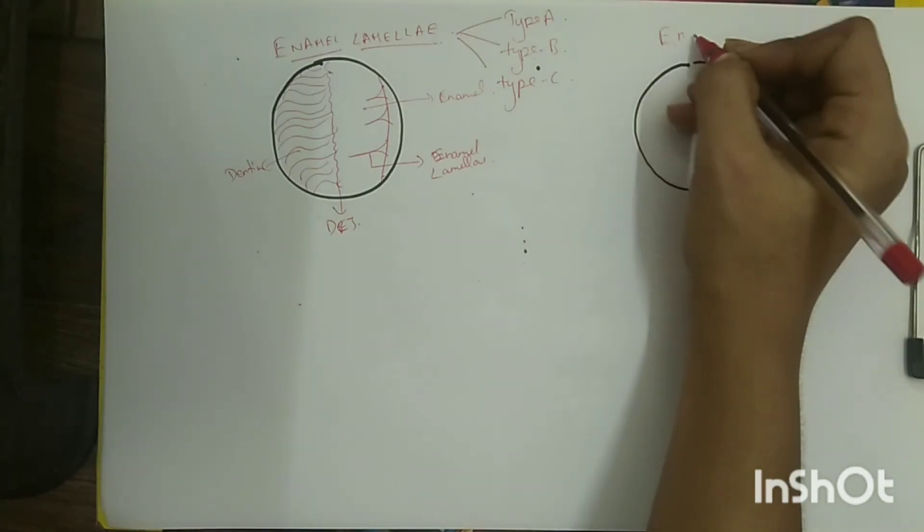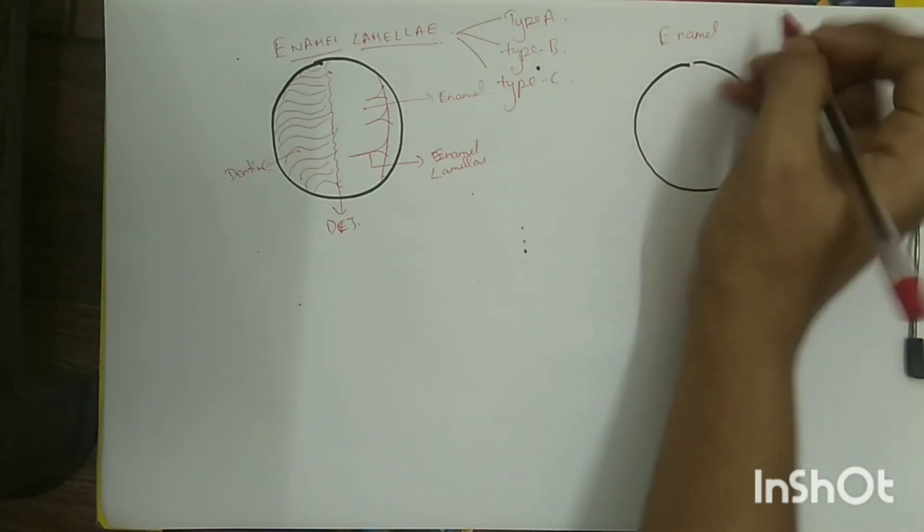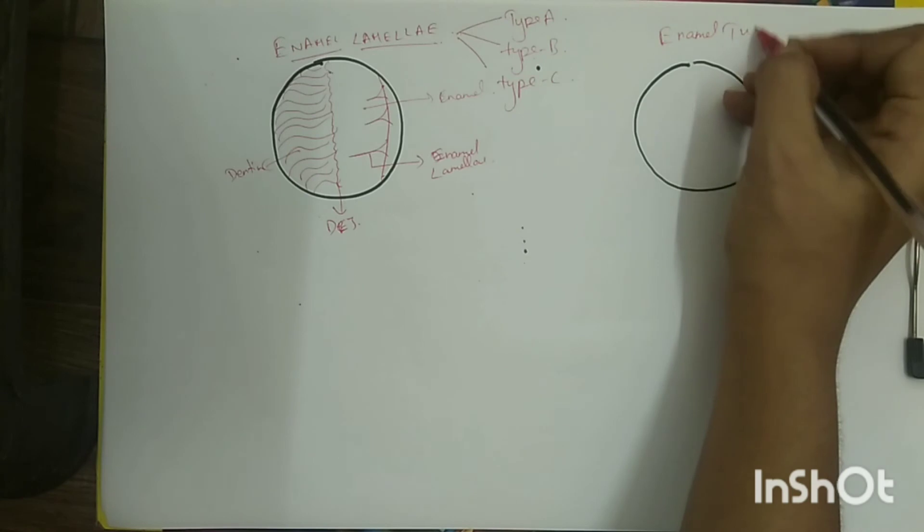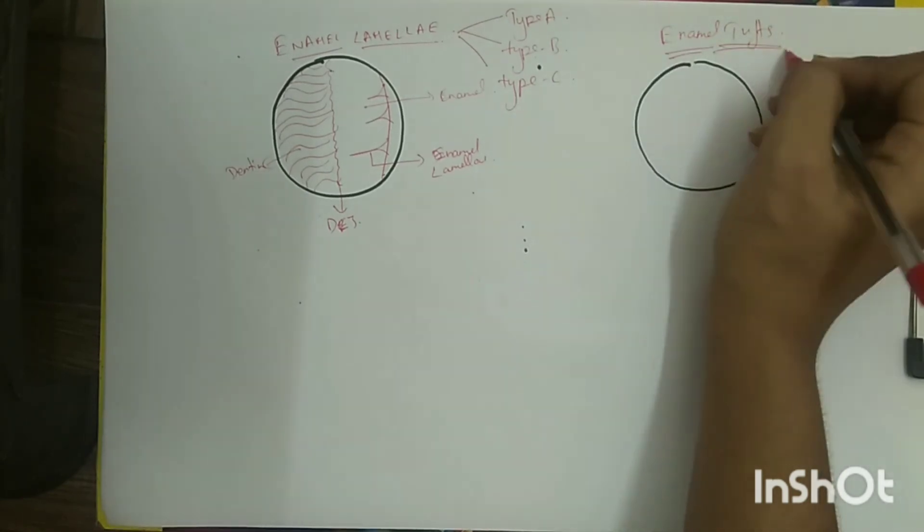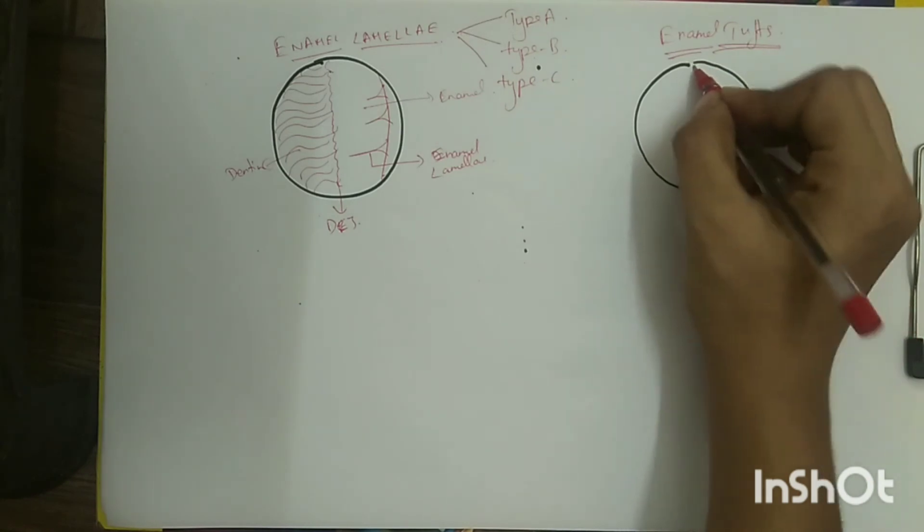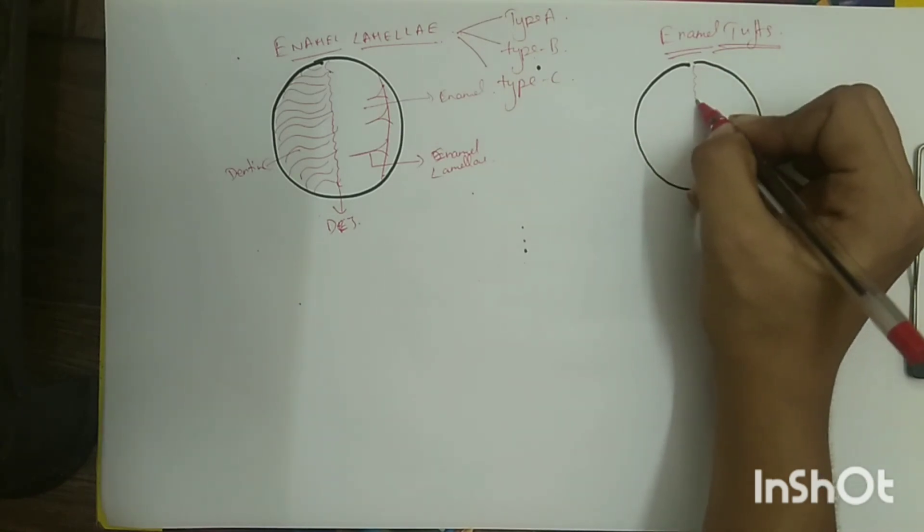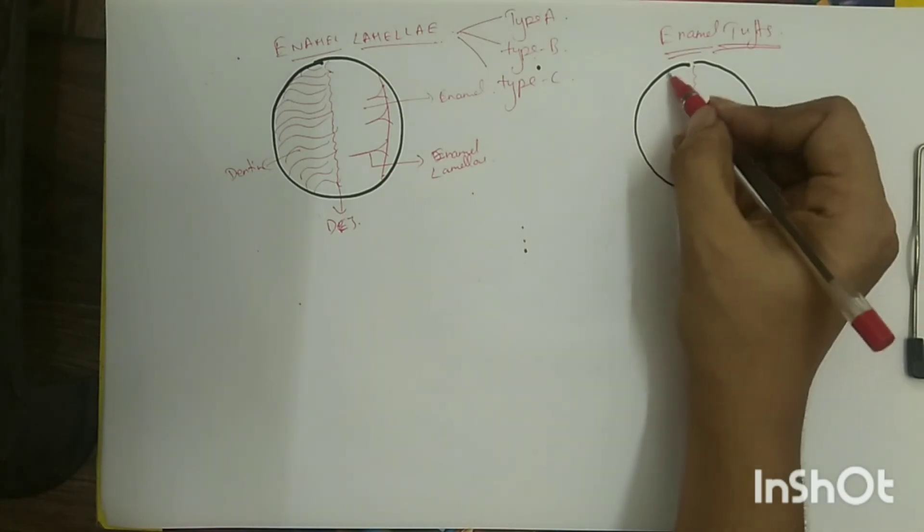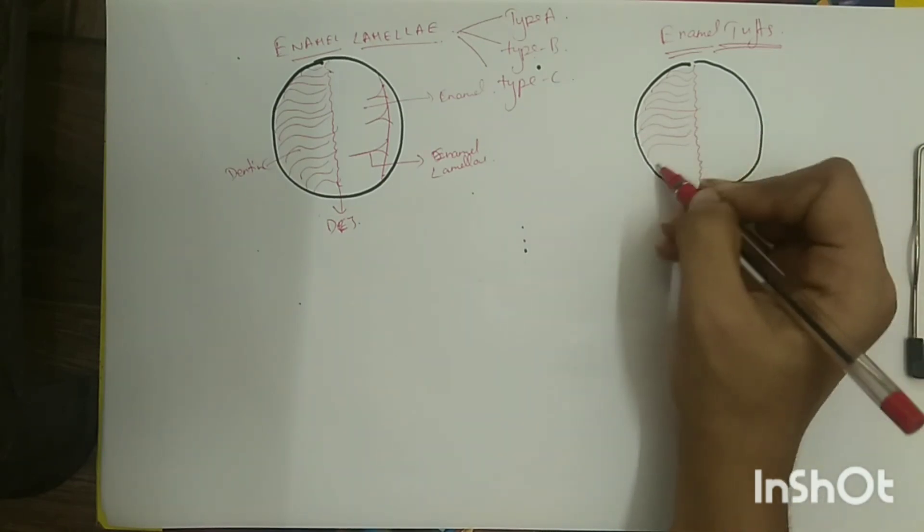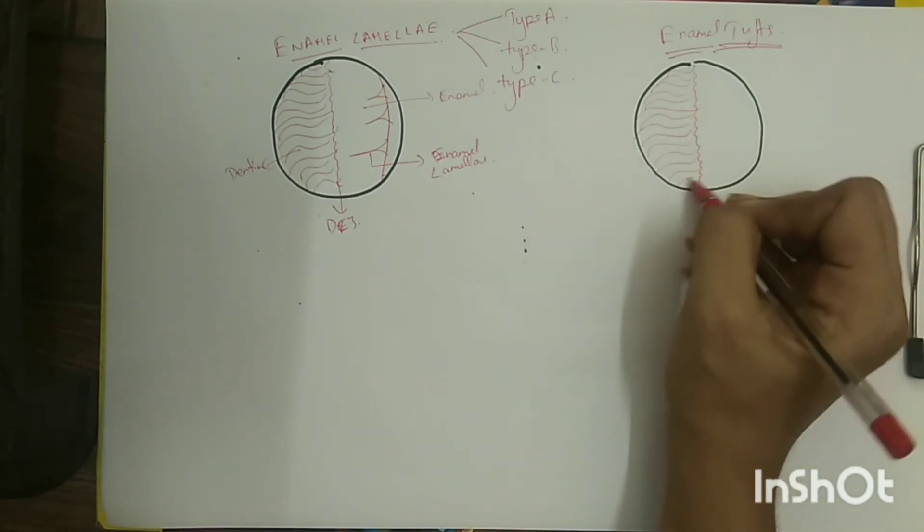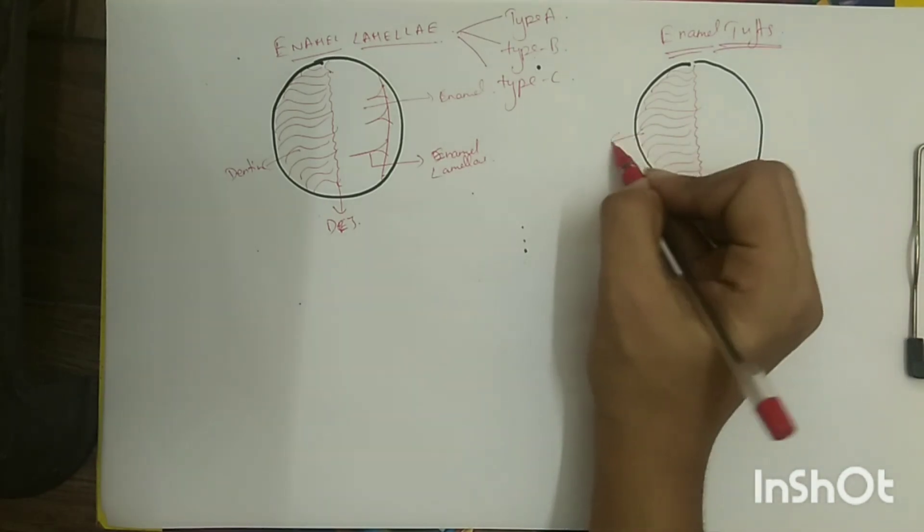Enamel tufts are thin, wavy, ribbon-like structures arising from the DEJ. They reach a short distance into the enamel, usually up to one-third of the thickness. When thick ground sections are viewed under low magnification,